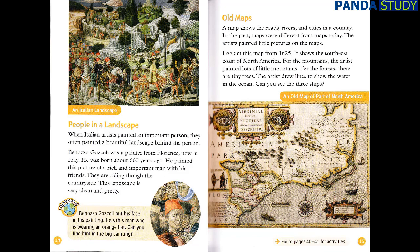When Italian artists painted an important person, they often painted a beautiful landscape behind the person. Benozzo Gozzoli was a painter from Florence, now in Italy. He was born about 600 years ago. He painted this picture of a rich and important man with his friends — they are riding through the countryside. This landscape is very clean and pretty. Benozzo Gozzoli put his face in his painting: he's the man wearing an orange hat.